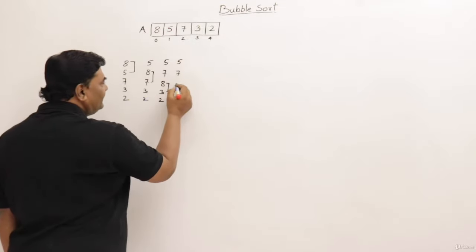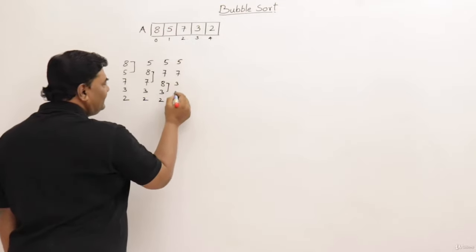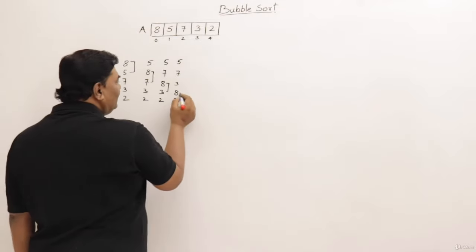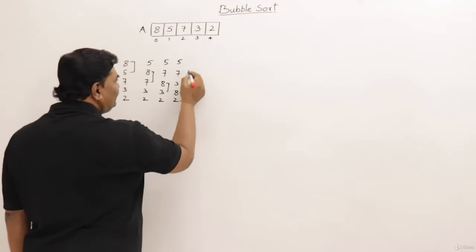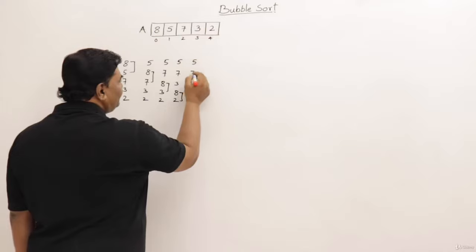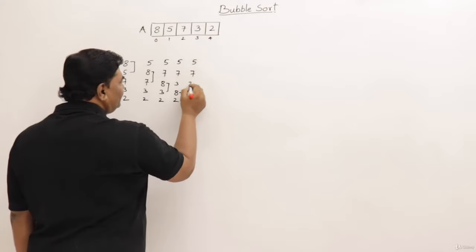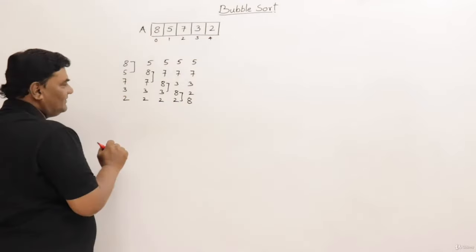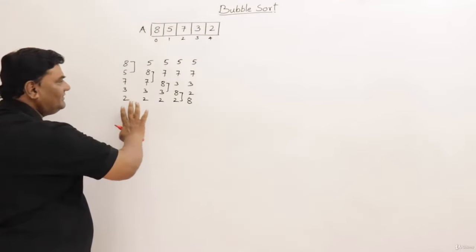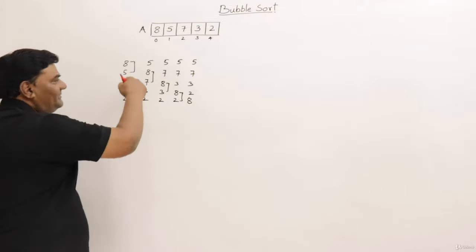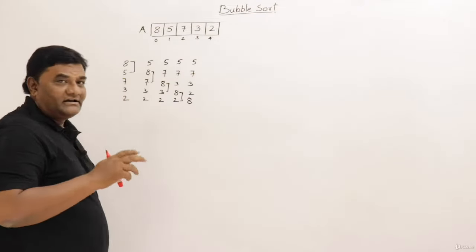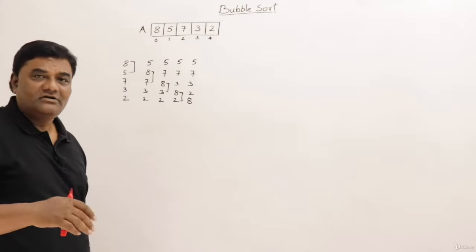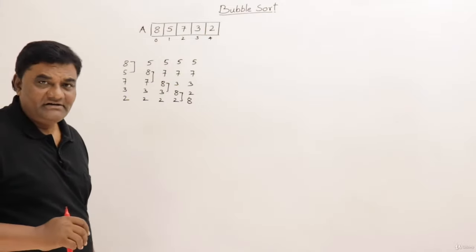After the third comparison we have five, seven, three, eight, two — because eight was greater. Then comparing eight with two: five, seven, three, two, eight. So I have now compared all pairs of elements. With five elements there are four possible pairs, and we have compared all of them.